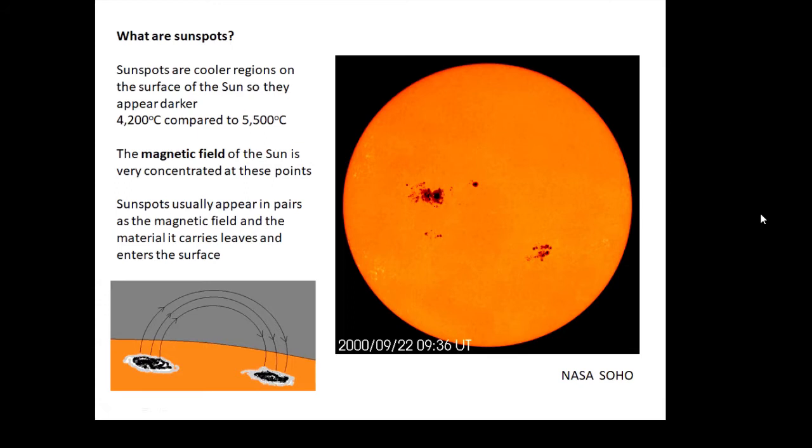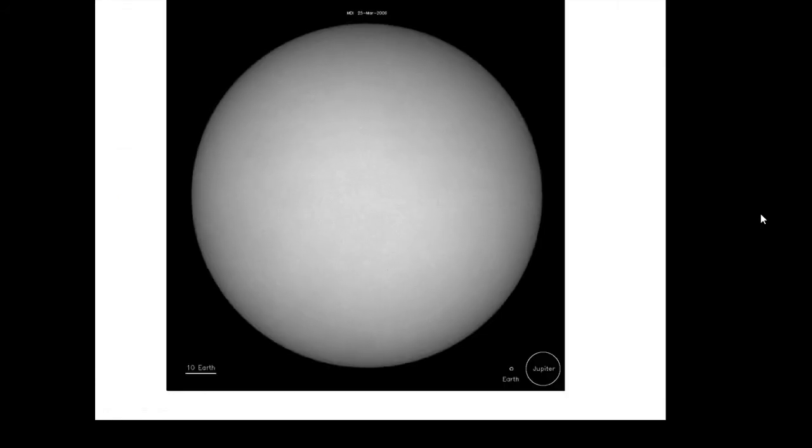Now I put together some pictures from the Soho website of the surface of the sun. I believe this is in 2006. And if we watch, we can actually see that the sunspots move across the surface of the sun.